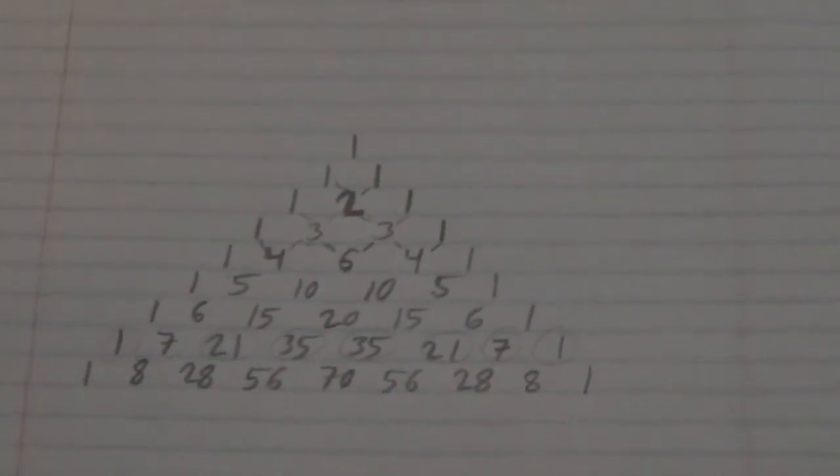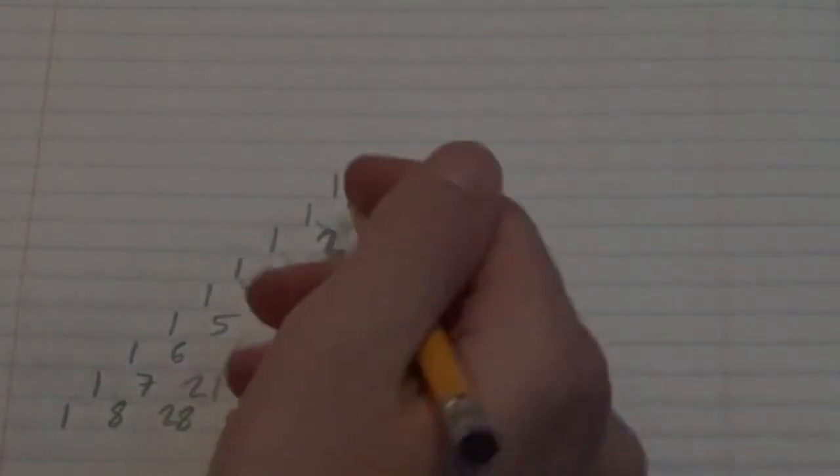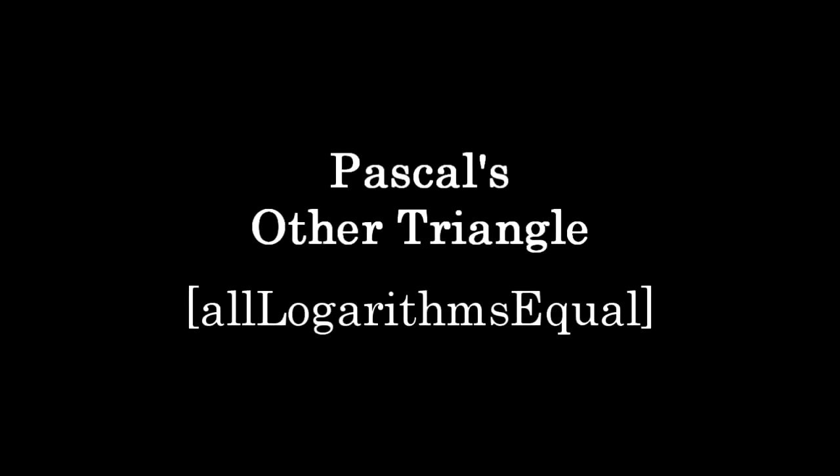My idea was actually to extend this triangle northward, so to speak. That's right, I believe we can see more of this triangle by deducing what the numbers would be above this first one. Hello, fellow mathematicians. I have an idea I wanted to share about Pascal's triangle.